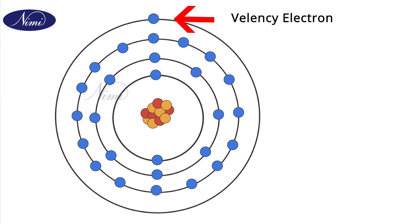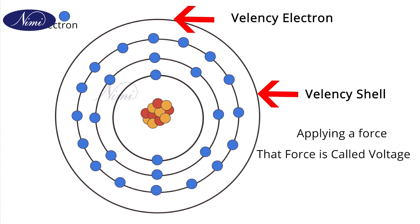The valency electron becomes free electron when it is removed from the valency shell by applying a force and that force is called voltage or EMF.